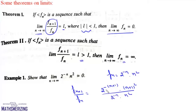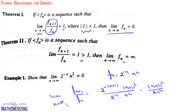Now 2 to the power minus n will cancel, so we can write this as (n+1) squared upon 2n squared. Now we take the limit n tends to infinite of this expression. This limit will be simply 1 by 2, which is less than 1. So since mod l is less than 1, limit n tends to infinite of f(n) will be 0.